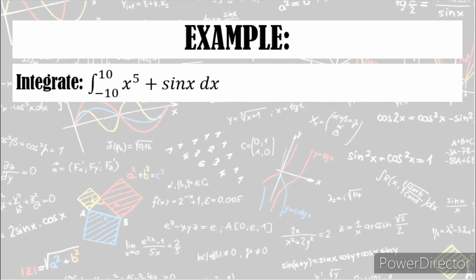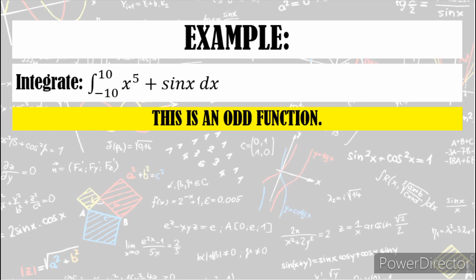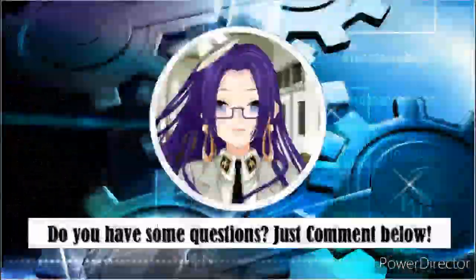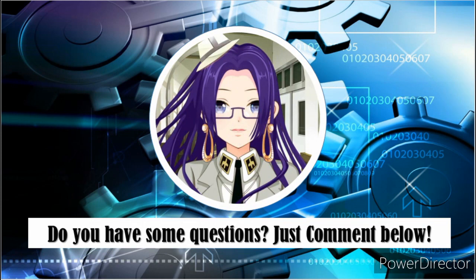For our next example, we have the integral of x^5 plus sine x dx from negative 10 to 10. By checking, this is an odd function. Therefore, the answer is simply 0. That's the end of our tutorial video for today. If you have any questions, just comment below. Thank you for watching.